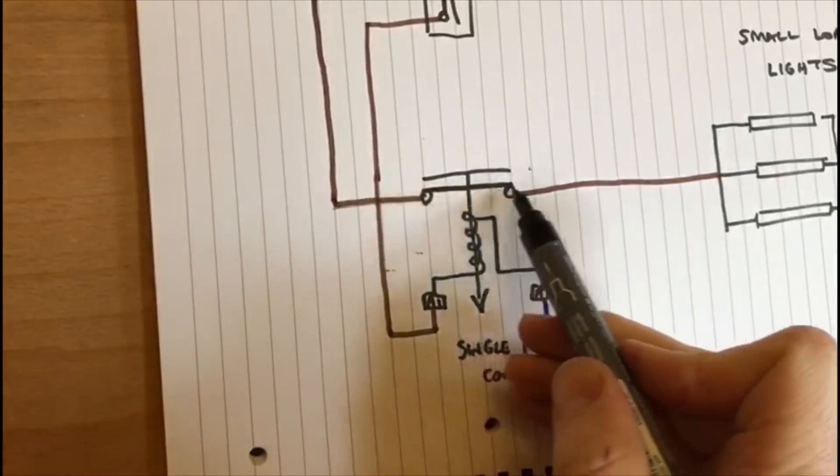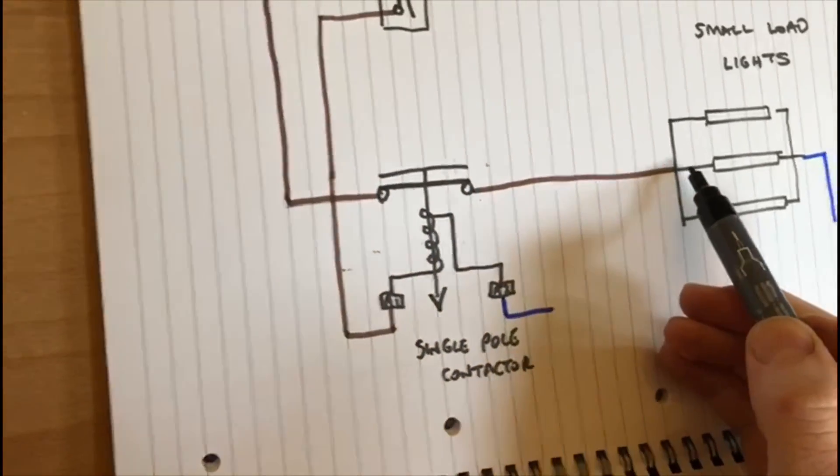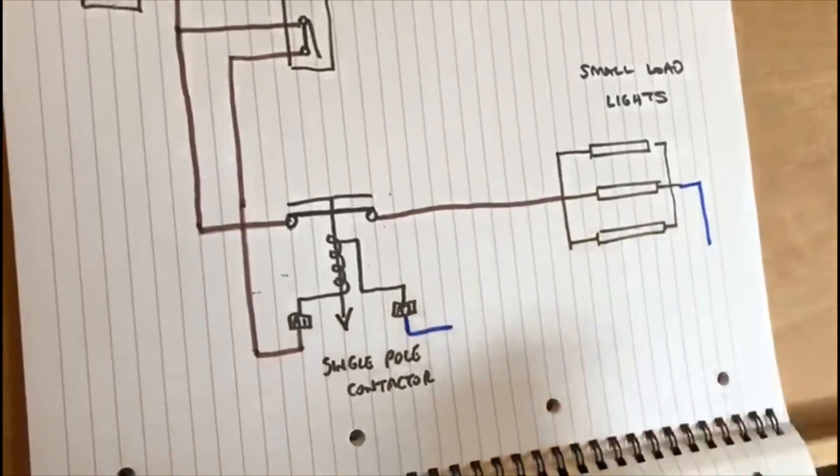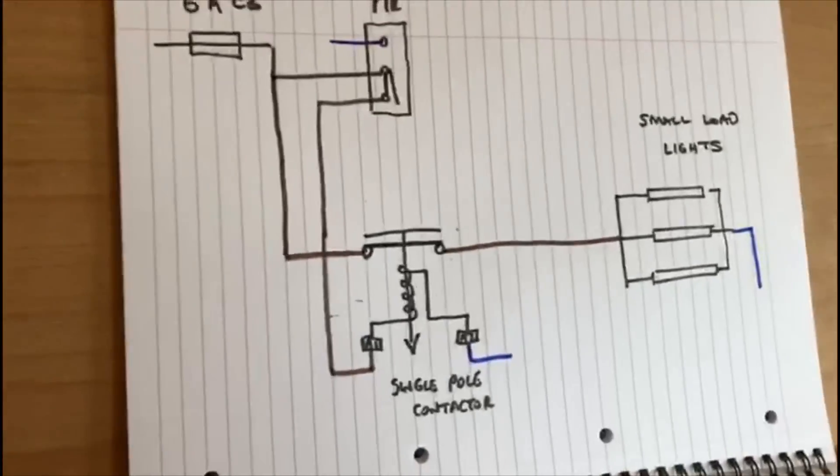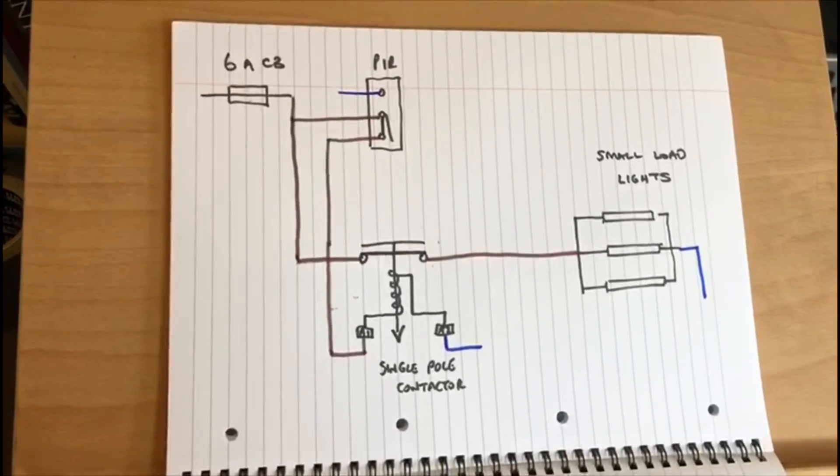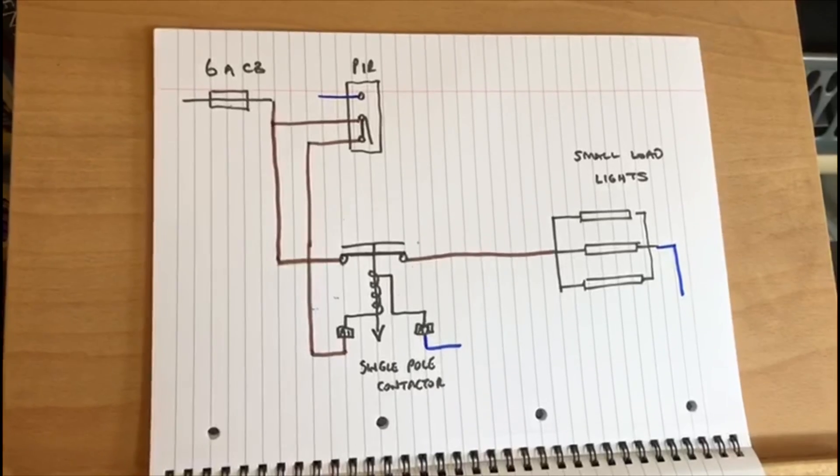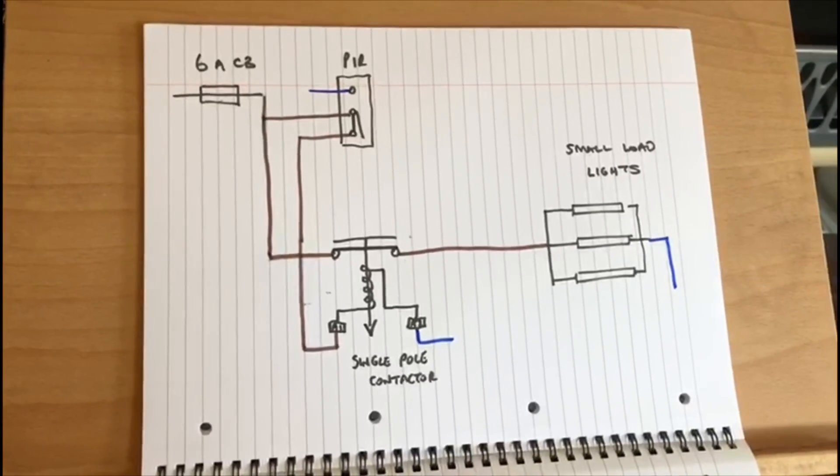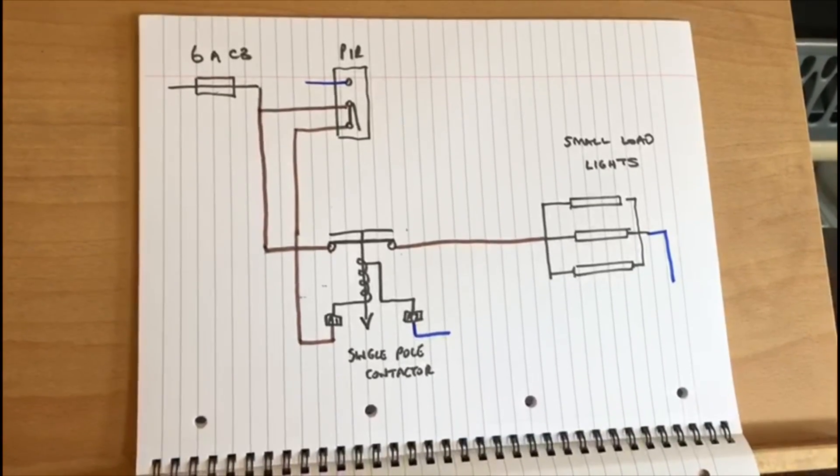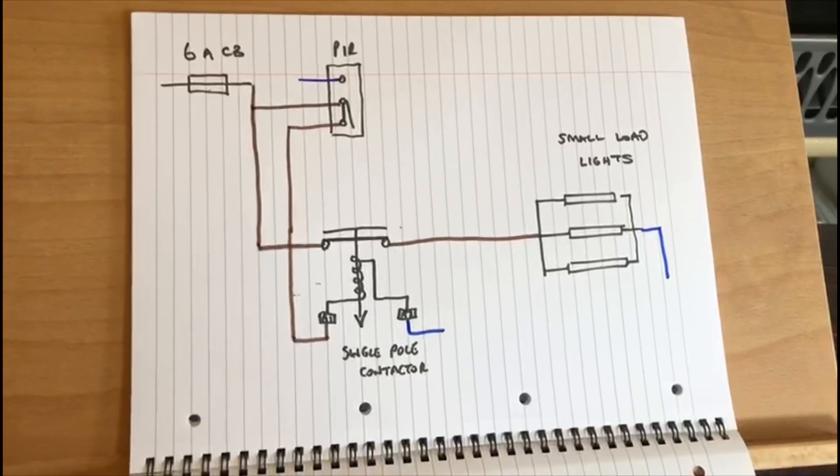And as you can see, then the lights would illuminate. So I think that's quite a nice simple circuit that shows how the use of one circuit breaker with a PIR and a contactor, how that would operate.